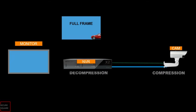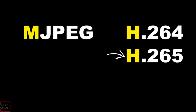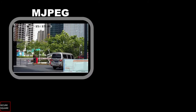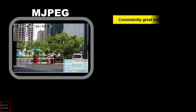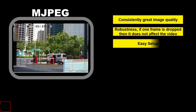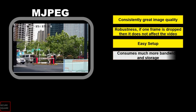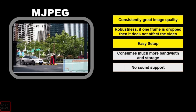The third codec is MJPEG. It stores each frame as a separate JPEG image, which can consume more storage space but offers superior image quality. MJPEG, or Motion JPEG, doesn't compress videos as efficiently as H.264 or H.265. Its advantages include consistently great image quality, robustness — if one frame is dropped it does not affect the video — and easy setup. The disadvantages are that it consumes much more bandwidth and storage, and has no sound support.